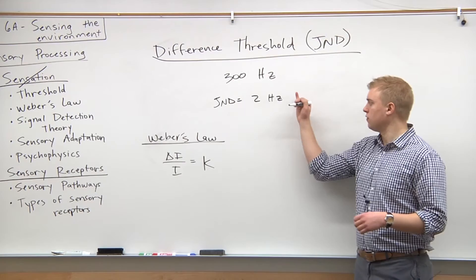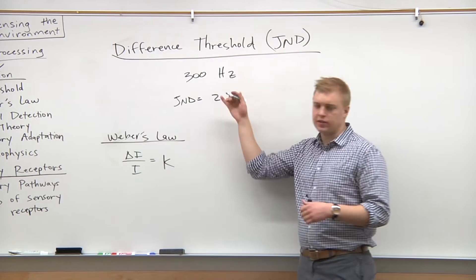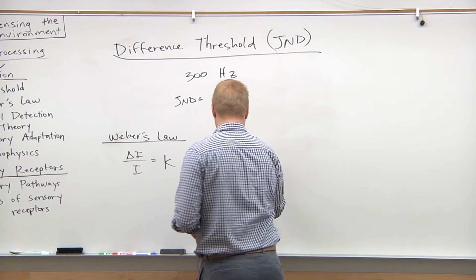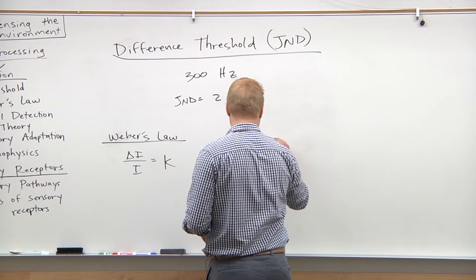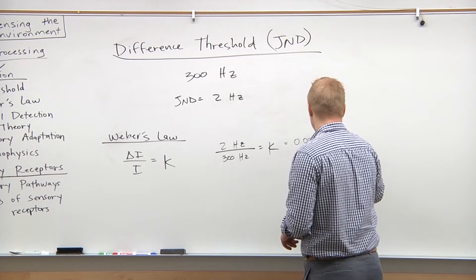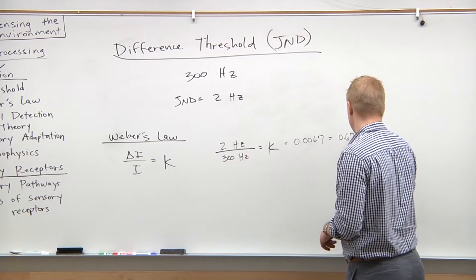If we want to find the Weber's constant for this sound, because using that then we can find the difference thresholds for other sounds. The JND being two hertz, so using our equation here, we got two hertz and the original stimulus was 300 hertz, equals k, which is going to be two over 300, which is 0.0067, or you can also write this as a percentage, so this is a 0.67 percent change.